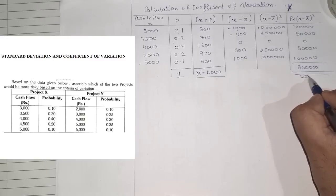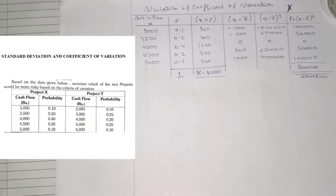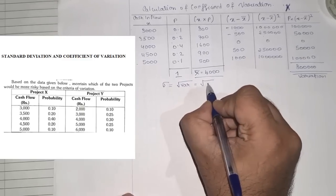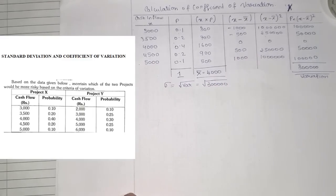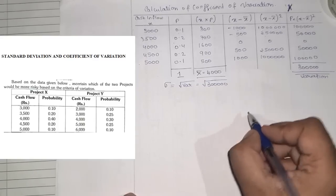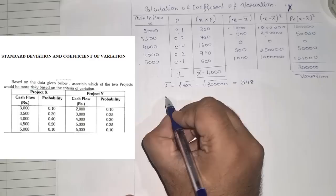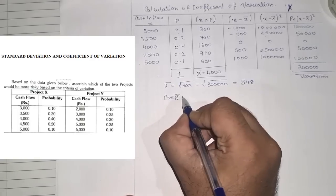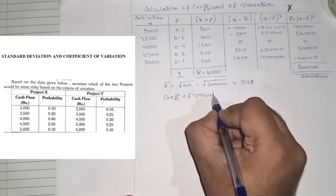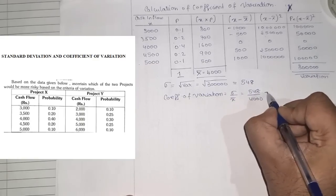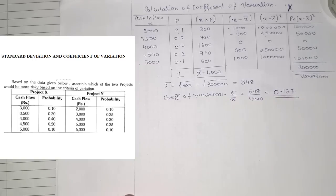Standard deviation for Project X = √3,00,000 ≈ 548. Coefficient of variation = standard deviation ÷ x̄ = 548 ÷ 4,000 = 0.137. Now similarly, we find the same for Project Y.